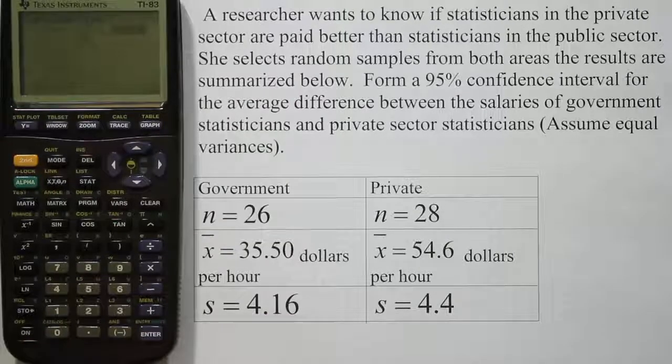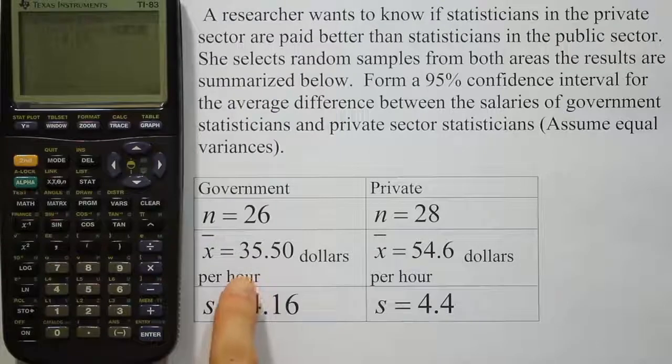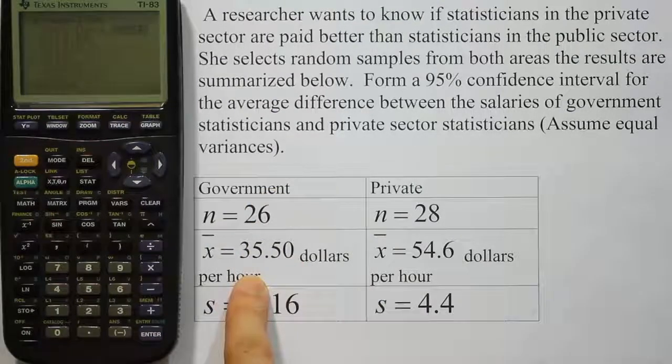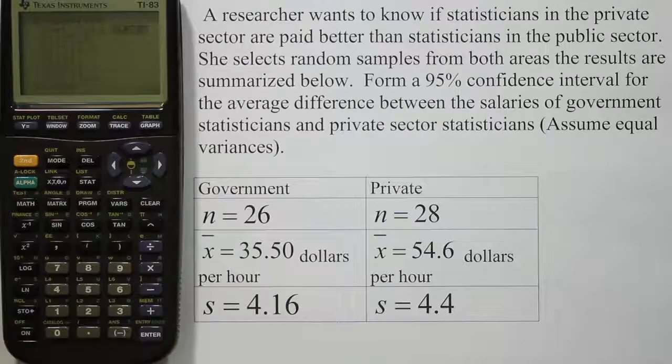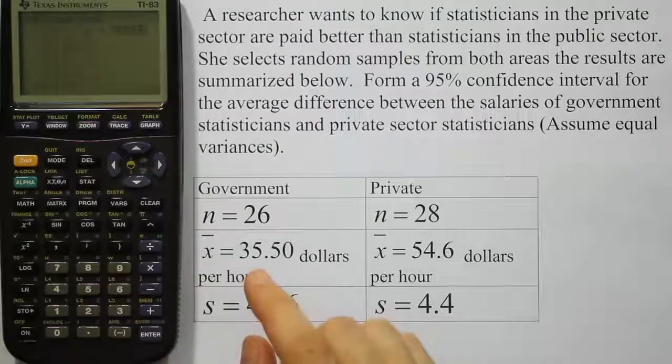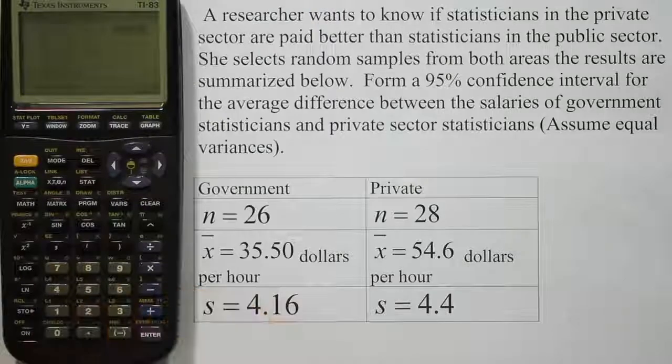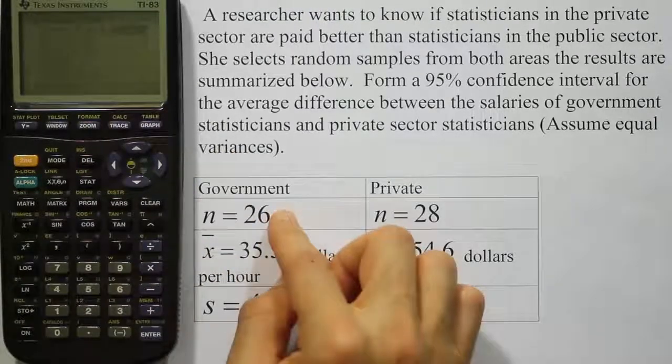So we're going to hit enter on the stats option. Then we're going to scroll down to where we see the x̄ values first. So x̄₁, let's let the government be the first one. So x̄₁ will be 35.5. And then we'll scroll down to where it says standard deviation for the first population. That's going to be 4.16. Then we'll scroll down to where it says n₁, that's going to be 26.